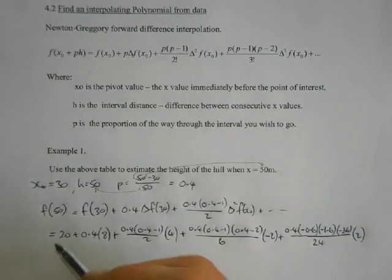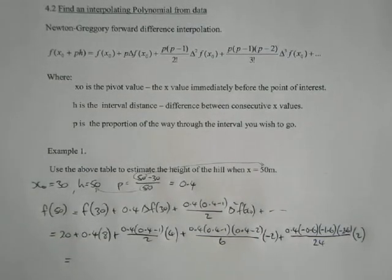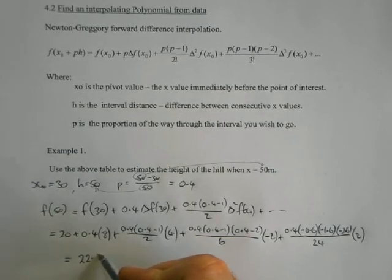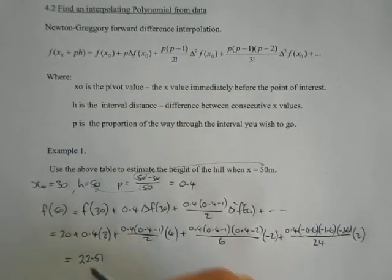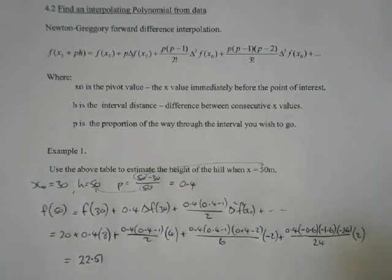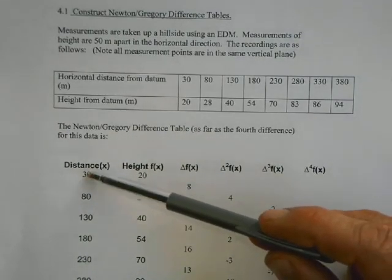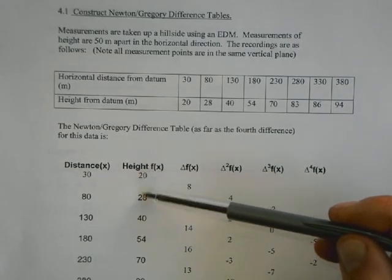And then it's just a matter of crunching numbers in the calculator, and if you do that, I think you'll find it comes out to be 22.51. So when we go 0.4 of the difference between 30 and 80, our answer is going to come out to be 22.51.